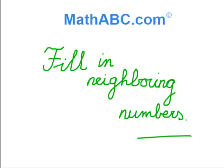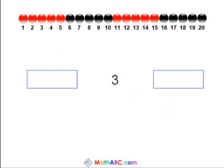Fill in neighboring numbers. We see here a number line and below it the number 3 and 2 boxes. So what we need to do is figure out who would be 3's neighbor, the neighbor to the left and to the right.